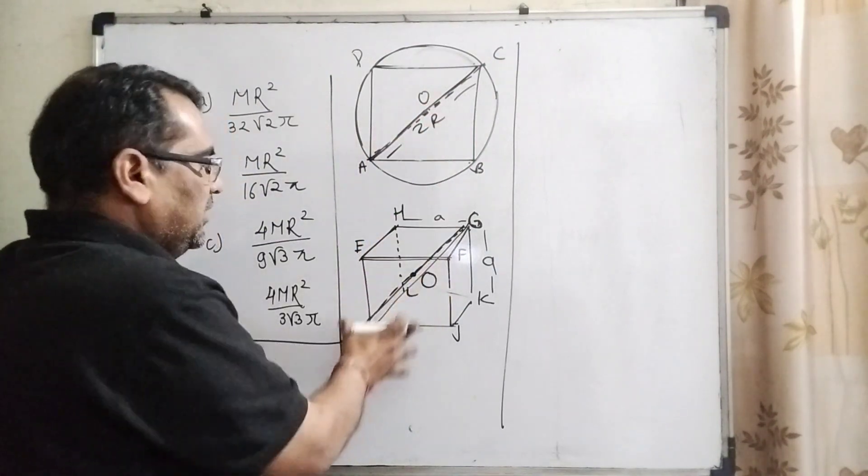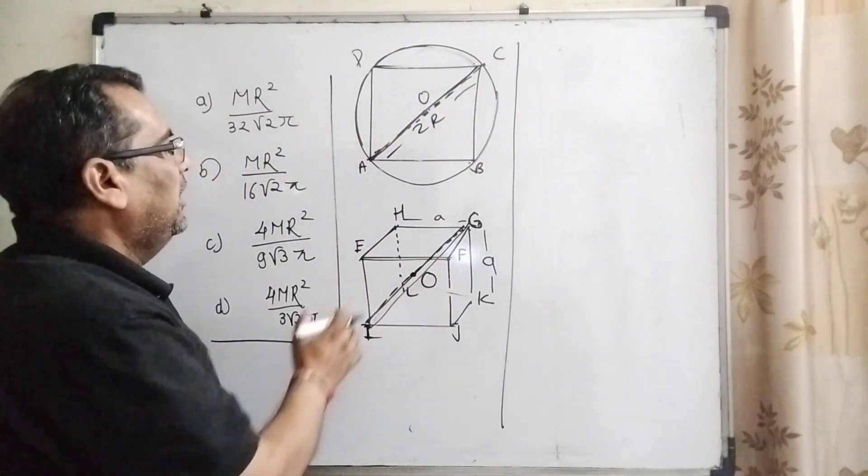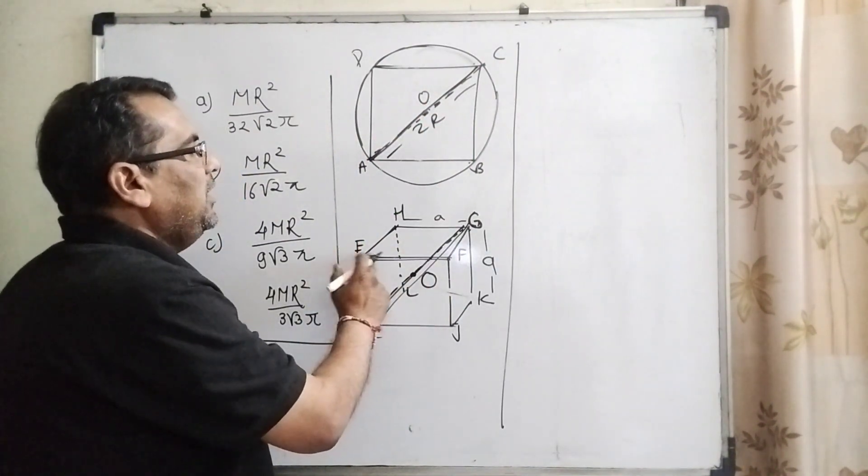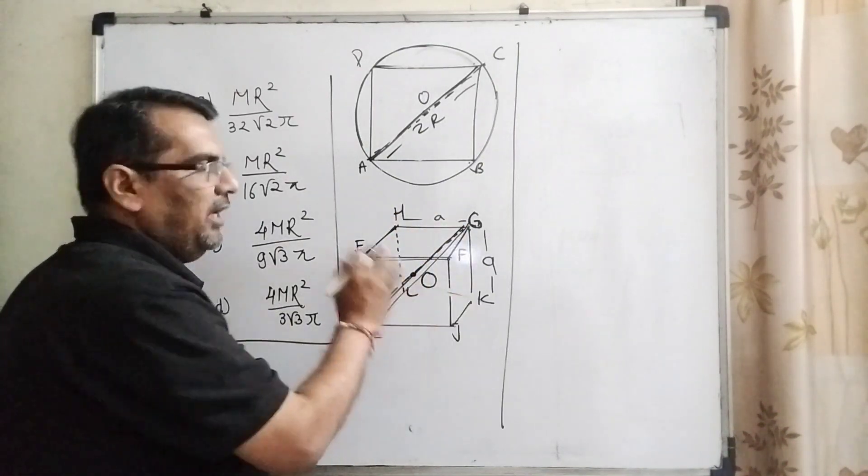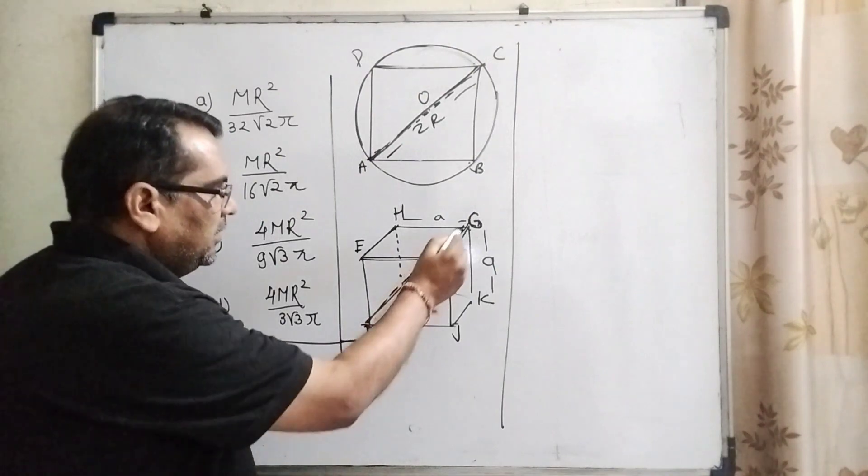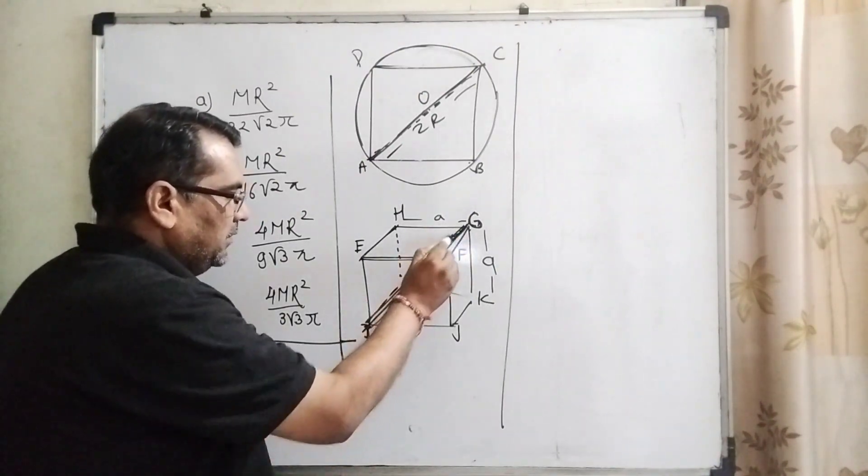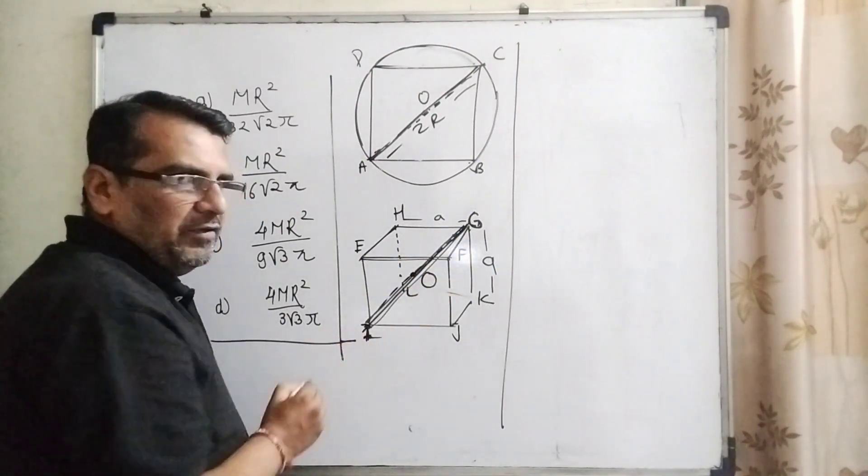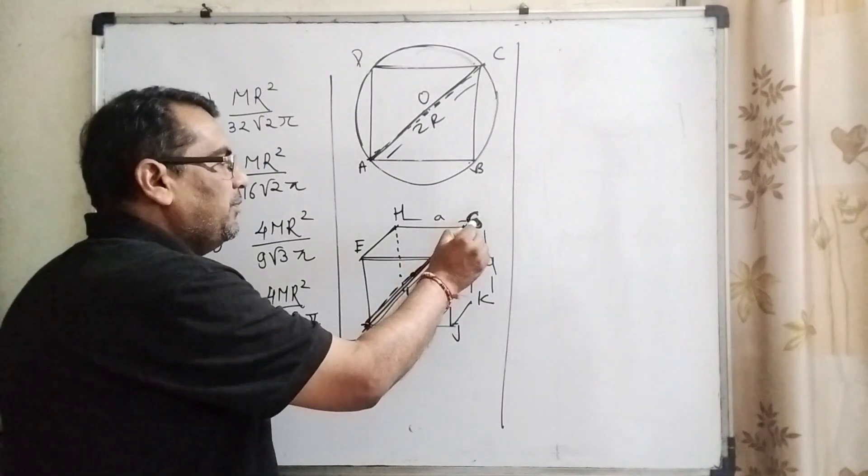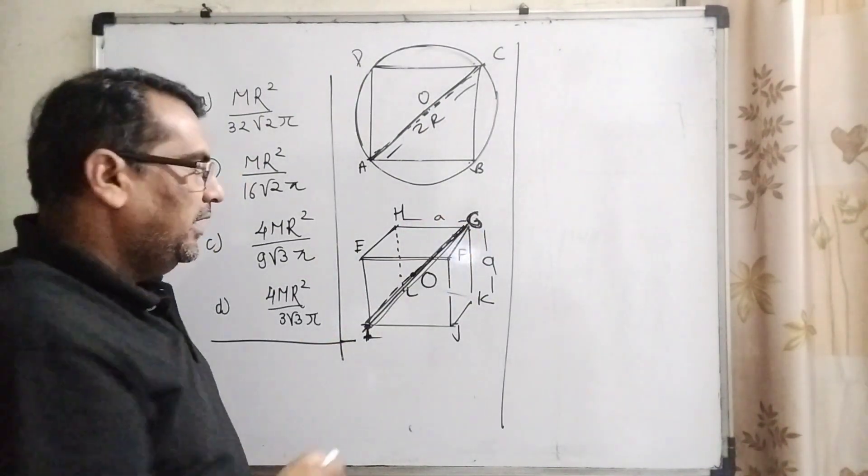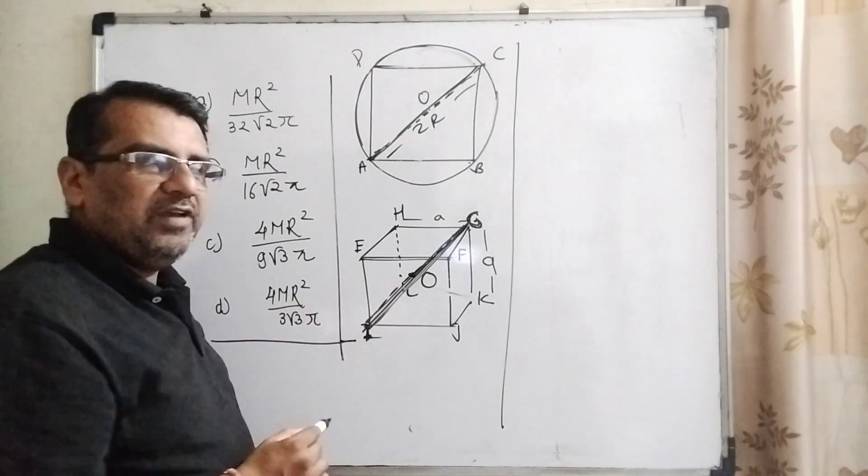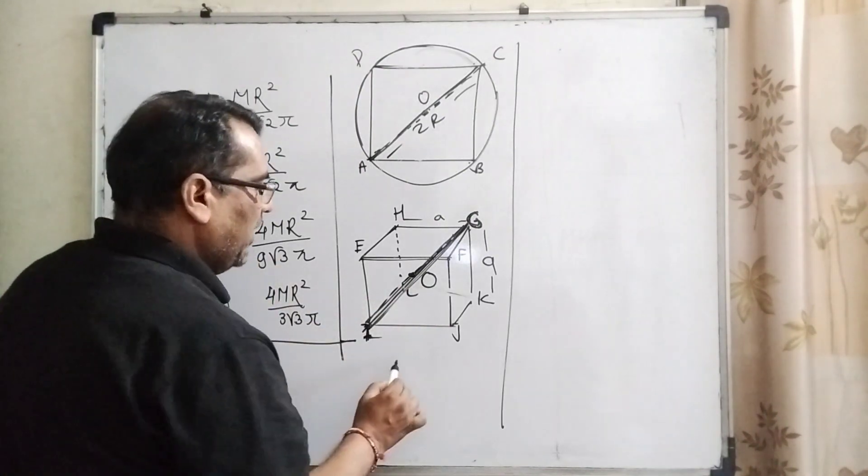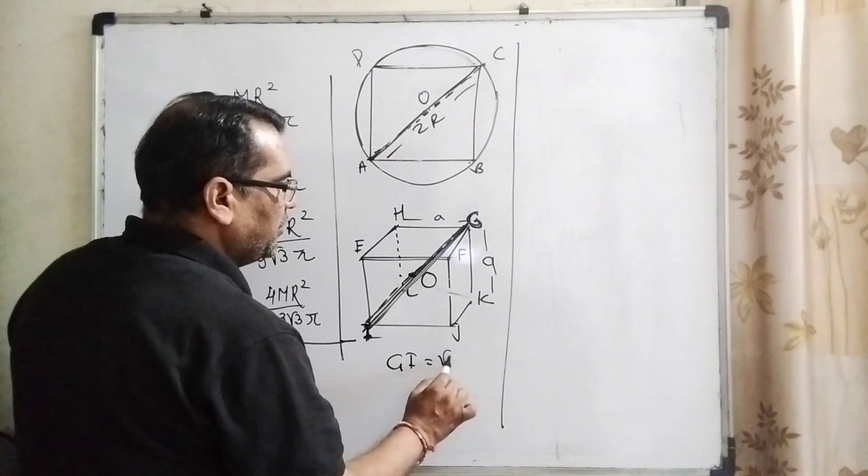We have cut it separately here. Its vertices are named E, F, G, H, I, J, K, L. The joint diagonal, where I is the point of the front face and G is the point of the back side face, joining together you can see the length of the diagonal. What is the formula for length of diagonal? Length of diagonal is √3 times the side.